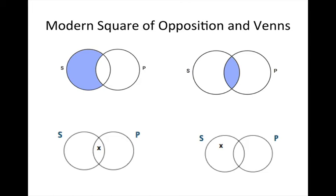The modern square of opposition and Venns make much clearer why only contradictories are allowed when we don't assume a member of the subject class exists. Once again, take a look at these diagrams in connection with our previous discussion about contradictories. Notice that the A and O say opposite things visually, and the E and I say opposite things visually. Remember, these diagrams are visual representations of the logical structure of each of our four claim types.